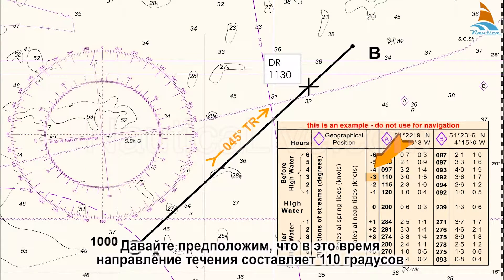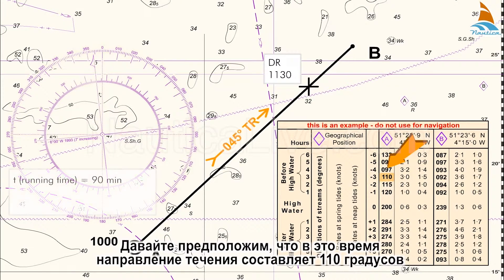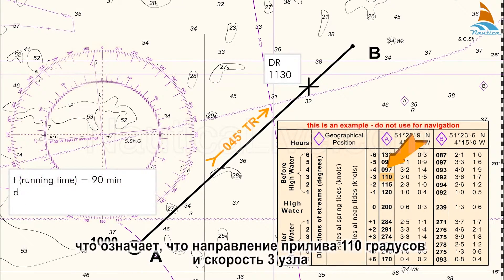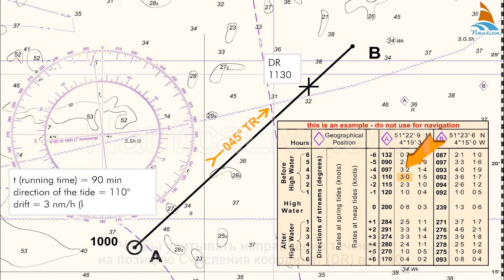Let's assume that at that time the set is 110 degrees, which means that the direction of the tide is towards 110 degrees, and the drift is 3 knots.